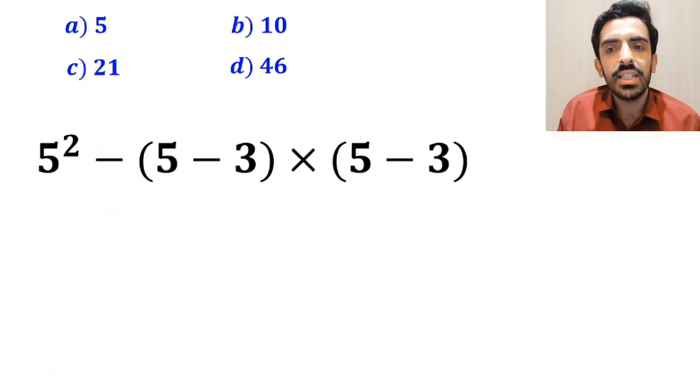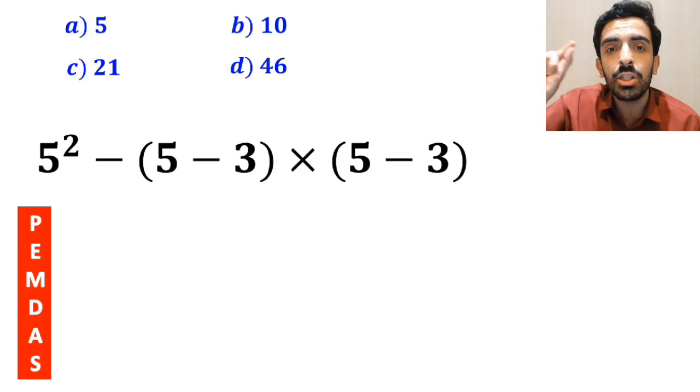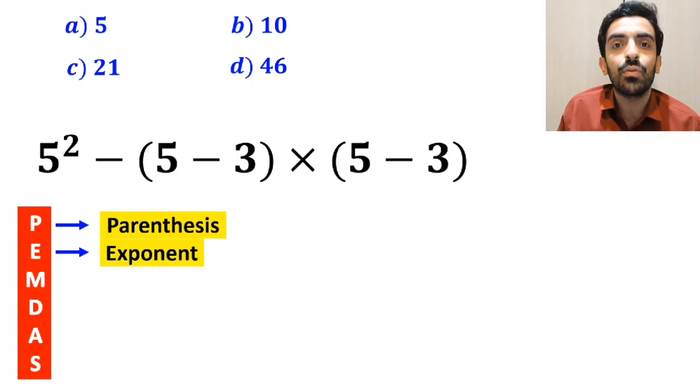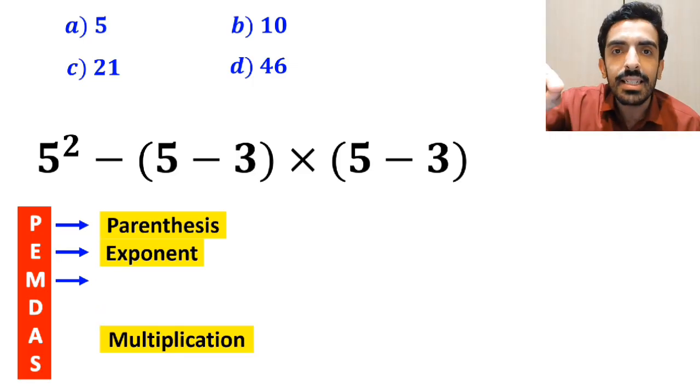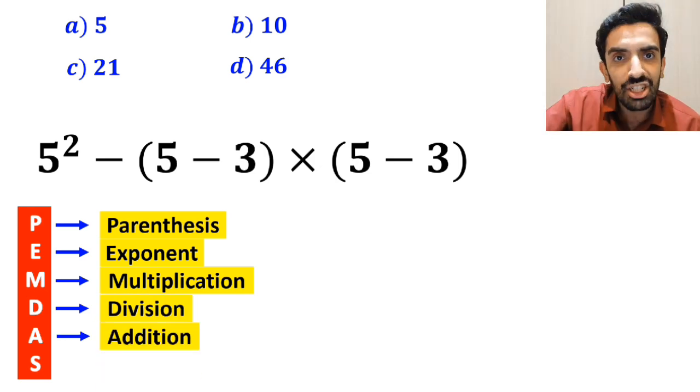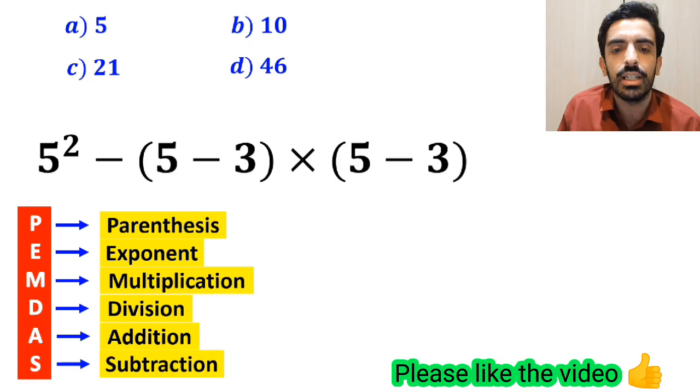To solve this question, we must strictly follow the PEMDAS rule. In this rule, P stands for parenthesis, E stands for exponent, M stands for multiplication, D stands for division, A stands for addition, and S stands for subtraction.